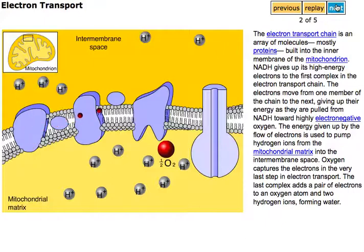The energy given up by the flow of electrons is used to pump hydrogen ions from the mitochondrial matrix into the intermembrane space.